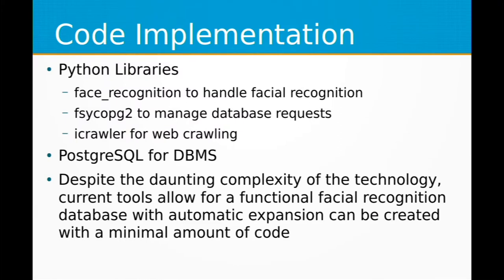I used face_recognition for the facial recognition, psycopg2 for the database requests, and iCrawler for web crawling — all very simple Python libraries. Even though facial recognition can seem really daunting, the main shift to make is how you treat data and how you look at data gathering. It's very similar to any other sort of data-based programming, but working in multiple dimensions and with techniques that you haven't necessarily seen used before. All of these things are completely available and developed. Even though facial recognition seems like the research papers — just a bunch of math I definitely can't understand — you really don't have to work with that now. And that, to some point, scares me in how easy this actually is to do.